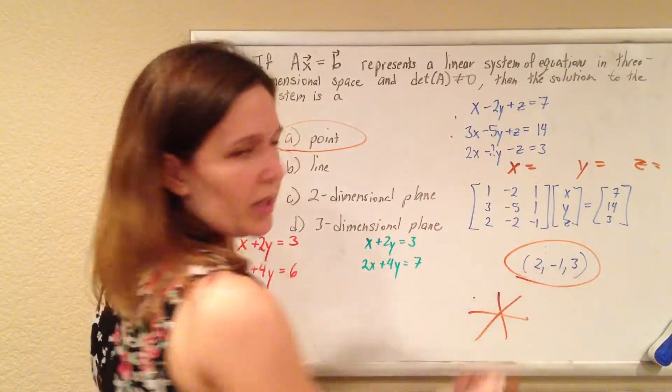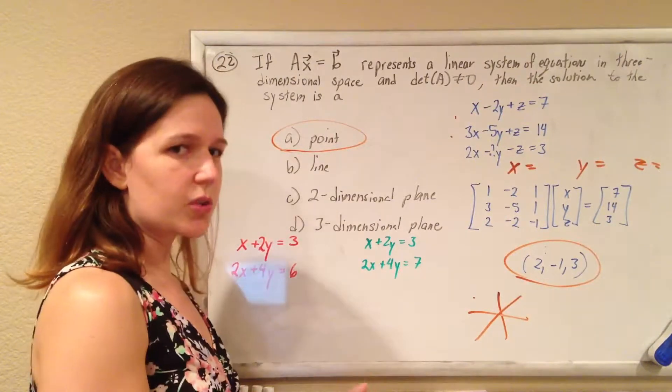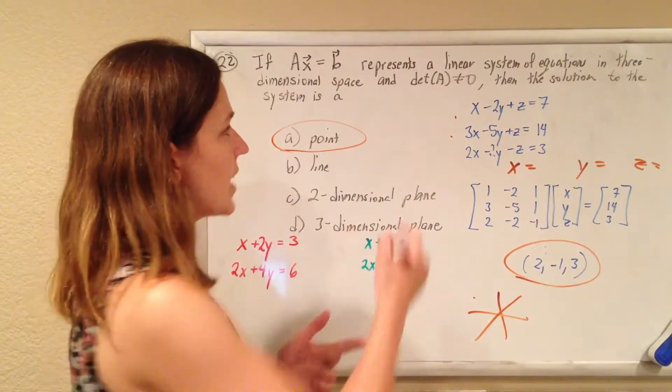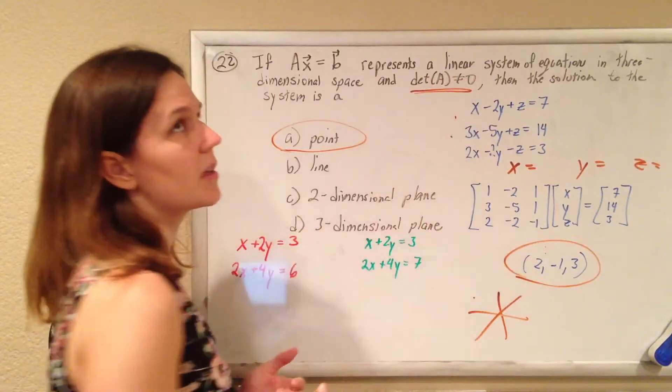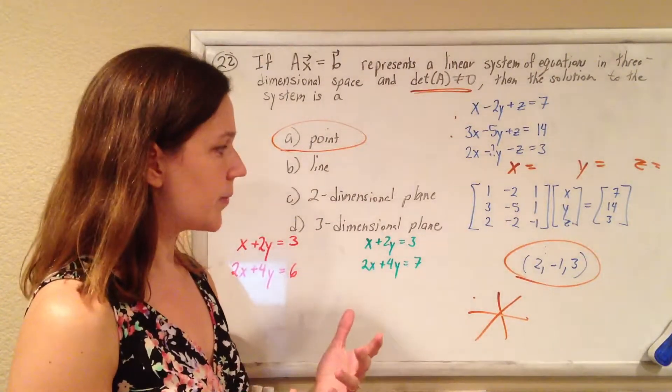because usually we get a point as our answer, but sometimes you get those funky answers, those no-solution answers, and those infinite number of solution answers, and those happen when the determinant, if the determinant equals zero, is when you're getting those funky answers. So,